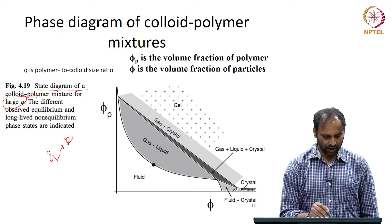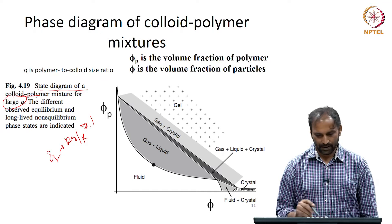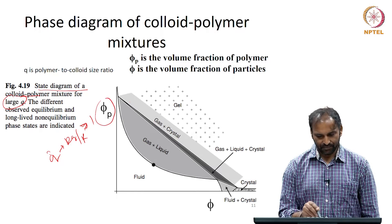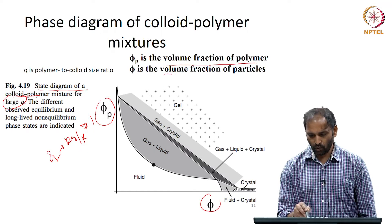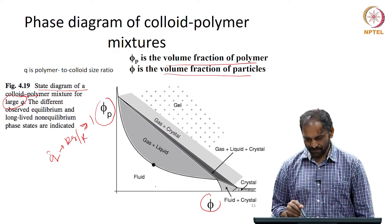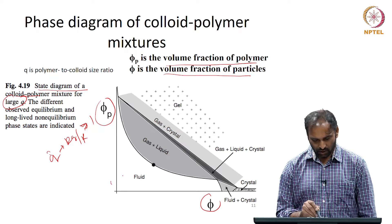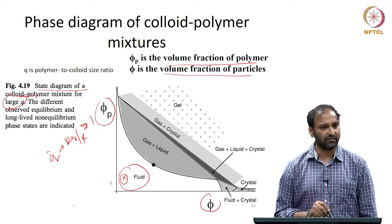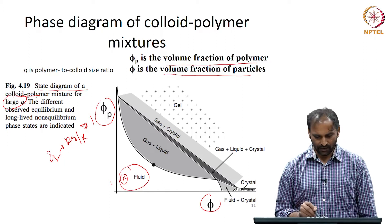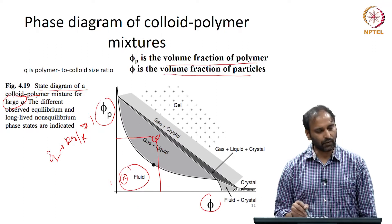What is plotted is φp — the volume fraction of polymer in the solution — versus φ — the volume fraction of particles in the solution. When both polymer and particle concentrations are very low, the mixture will be fluid-like. At appreciable concentrations of polymer and particles, you could have a gas-liquid kind of coexistence.